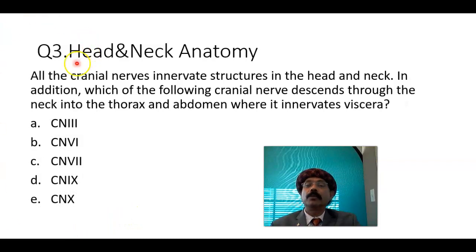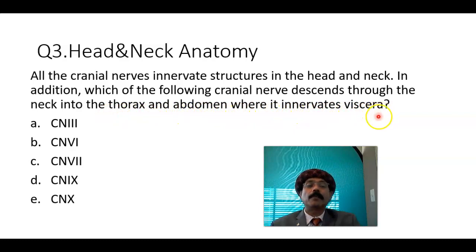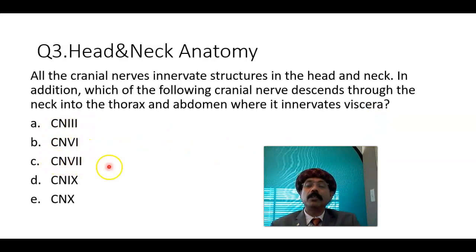Then question number 3: all of the cranial nerves innervate structures in the head and neck. In addition, which of the following cranial nerves descends through the neck into the thorax and abdomen, where it innervates the viscera — thoracic and abdominal? Choices: third, sixth, seventh, ninth, or tenth cranial nerve.